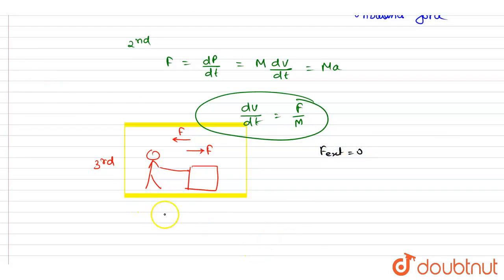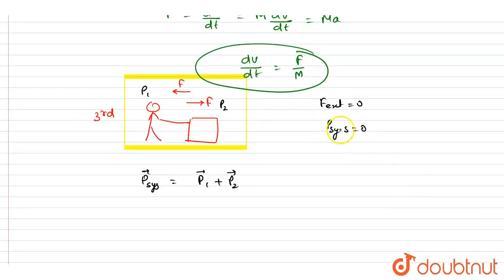So we can write down the momentum here will remain unchanged, system momentum, right? Since center of mass will not move. So if I write down the individual momentum of the two as p1 and p2, so I will write down the net momentum of the system equals p1 vector plus p2 vector.